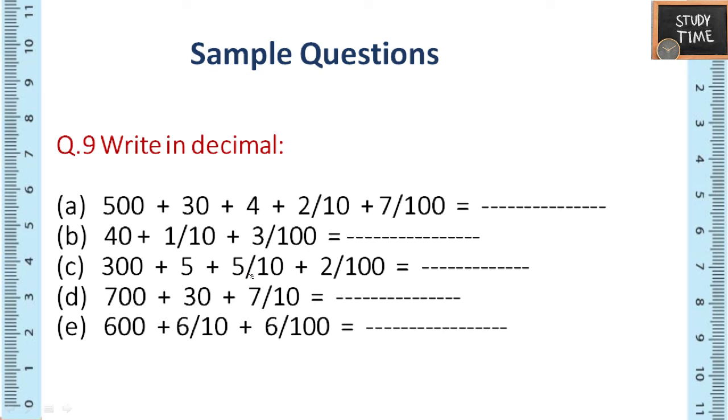Next ninth question: write in decimal. So you have to add, first let me show for the first question. 530, here you have to write 4, 2 by 10 is 0.2, and 7 by 100 is 0.07. So the answer would be here is 534.27. For the next it is 40.13 and the next would be 30.5, 5.52.